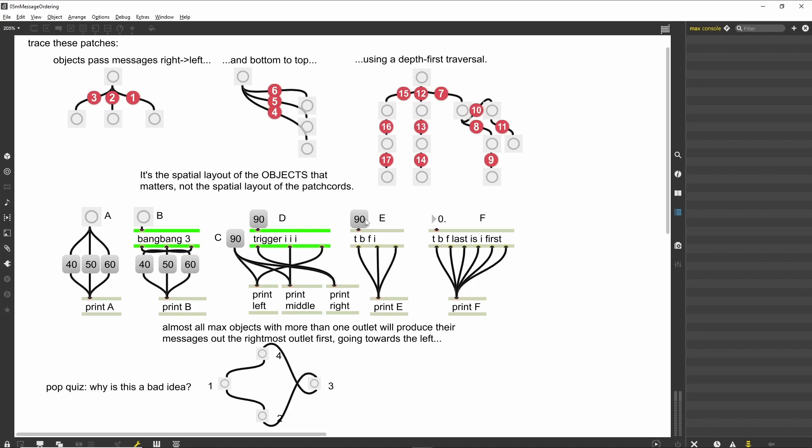The next patch to the right also uses the integer message 90, and is connected to a trigger object. However, in this case, three different arguments are used. When we click on message box E, we see that the output of the three outlets are all different, matching the difference in arguments. The rightmost outlet, with argument of type I, produces an unchanged 90 output. The middle outlet set to type F casts the incoming message to its floating point equivalent of 90.000000. Finally, the leftmost outlet, of type B turns the incoming message into a bang.